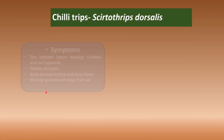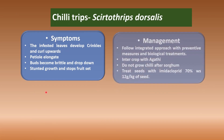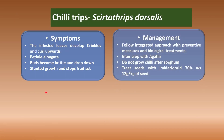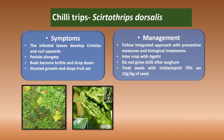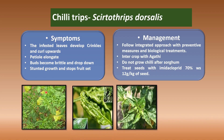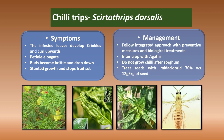Coming to the first most important insect pest of chili — chili thrips. The major symptom is crinkles and upward curling of the leaf, and there will be petiole elongation. If you see the buds, they will be brittle and drop down. Stunted growth in the crop will be seen, and fruit set will also stop if thrips are more in the crop.